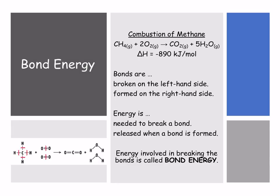When we talk about bond energy, we know that in any given reaction bonds are made and bonds are broken. For bonds to be made, bonds have to be initially broken. So on the left-hand side of a reaction our bonds would be broken, whilst on the right-hand side our bonds are made. We require energy to break a bond and we release energy when a bond is formed. The energy involved in breaking the bonds is called our bond energy.